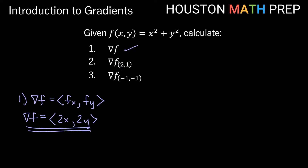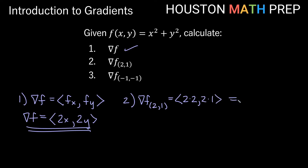Now if we want the gradient at the point (2, 1), it's straightforward. We plug in: 2 times x gives 2 times 2, and 2y gives 2 times 1. So that's the vector (4, 2), which gives us the direction of greatest increase at the point (2, 1).